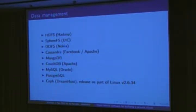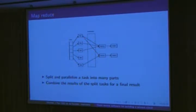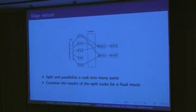Each one of those provides various different functionalities. We won't get much into it because I don't have that much time, but feel free to ask questions about it later. Once you've decided on a data management strategy, you have to look at what your MapReduce strategy is. Most people here know what MapReduce is, but we'll just overview it a little bit. It allows you to split and parallelize the task into many parts, and once you've computed the individual parts, it allows you to combine the results back for a final result.